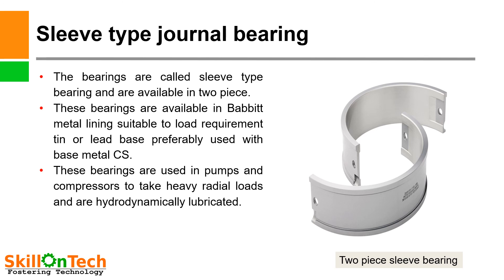Sleeve type journal bearing. You can see a picture of two pieces of a sleeve bearing. These sleeve type bearings are available in two pieces with babbitt metal lining — tin or lead base — suitable to load requirements, preferably used with base metal CS. They are used in large-size pumps and compressors to take heavy radial loads and are hydrodynamically lubricated. Other sleeve-type bearings suitable for radial and axial thrust loads will be discussed in an upcoming video.